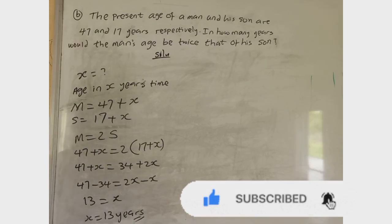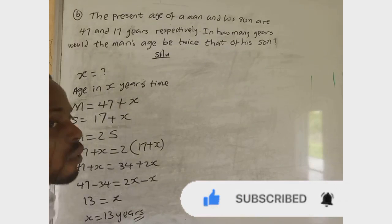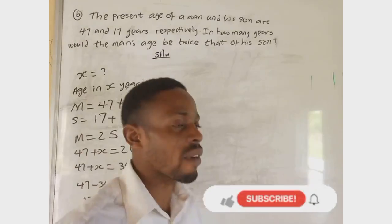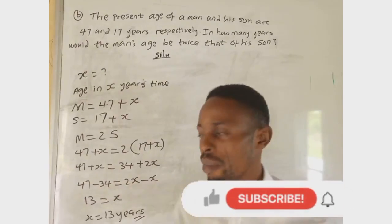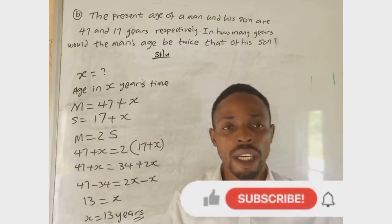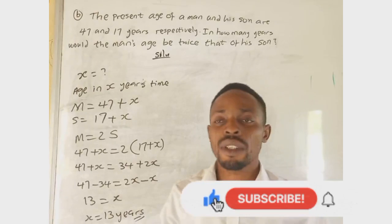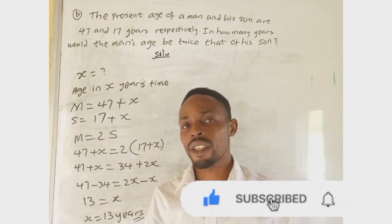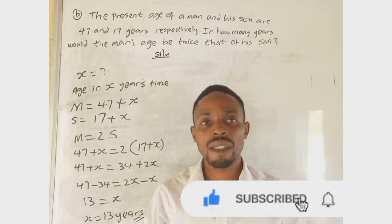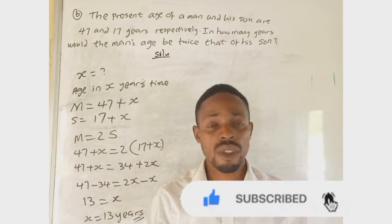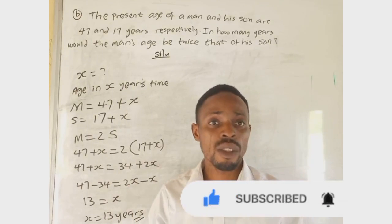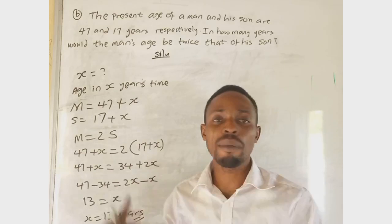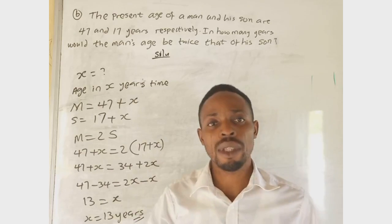The man's age will be twice that of his son in 13 years. That is how to solve this question. If you have any questions related to this video, let me know in the comment section. Don't forget to subscribe and like. If you need a past question for 2021 mathematics, let me know in the comment section.